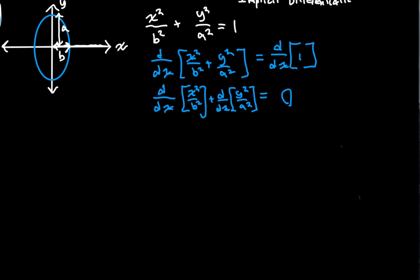So we can pull the B squared and A squared out, the 1 over B squared and 1 over A squared out to be precise. Because those are coefficients and we can just take them out of the derivative and have them in later.